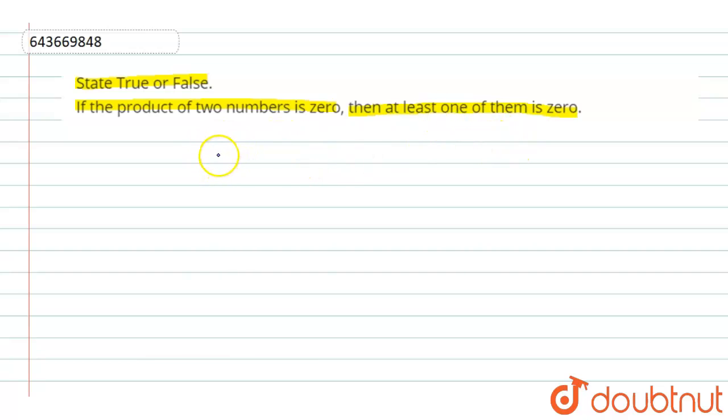So let's check. Take a nice example. 1 into 0 is equal to 0. 2 into 0 is equal to 0. 3 into 0 is equal to 0. 9 into 0 is equal to 0.